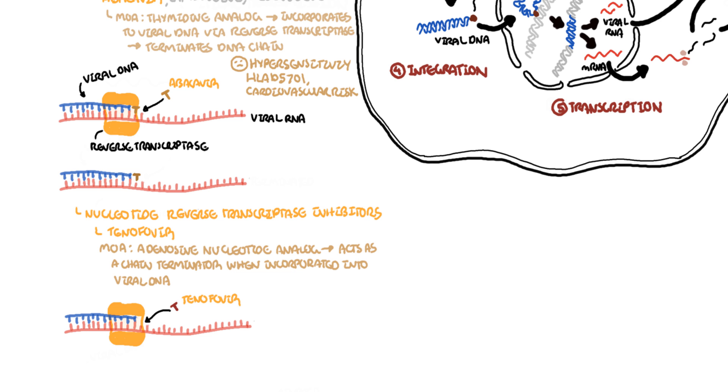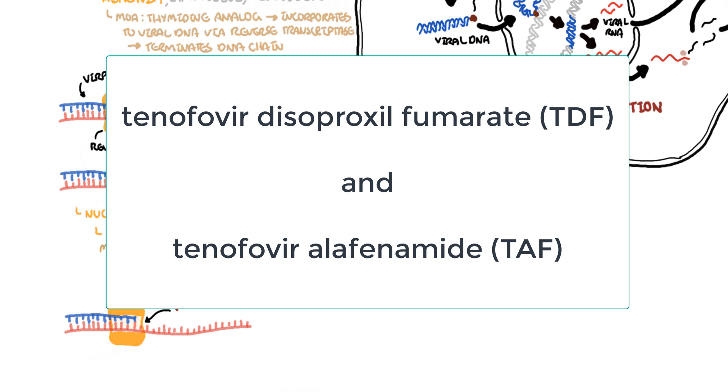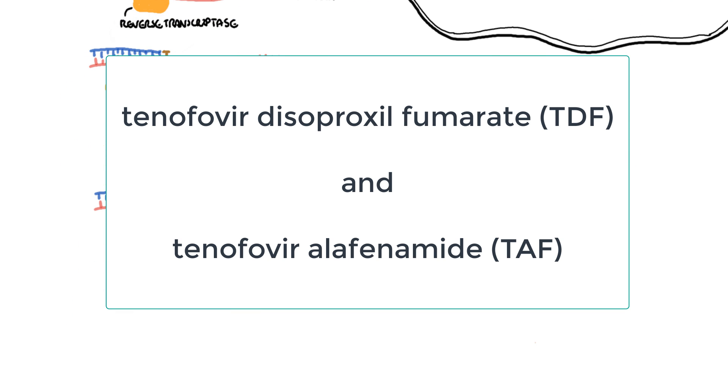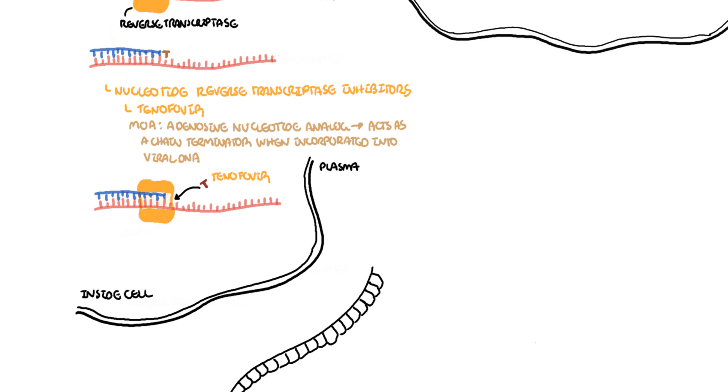Tenofovir comes in two forms: tenofovir disoproxil fumarate, TDF, and tenofovir alafinamide, TAF. TDF and TAF are oral tablets. They differ in half-life and effects on the kidneys and the bones. Both TDF and TAF are taken up from the gut when you swallow the tablet and act inside the cells to inhibit reverse transcriptase as mentioned.